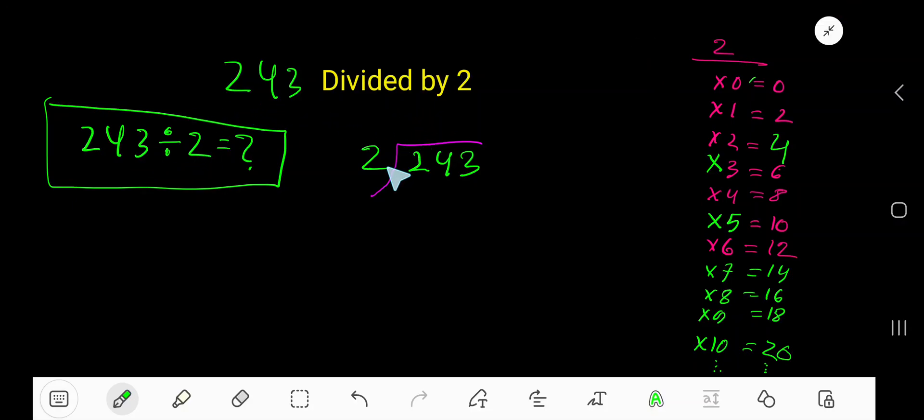243 divided by 2. Here 2 is a divisor, so we need the multiplication table of 2. 2 times 0 equals 0, 2 times 1 equals 2, 2 times 2 equals 4, 2 times 3 equals 6. To find out the multiplication table of 2, just start with the previous step: 0 plus 2 is 2, 2 plus 2 is 4, 4 plus 2 is 6.